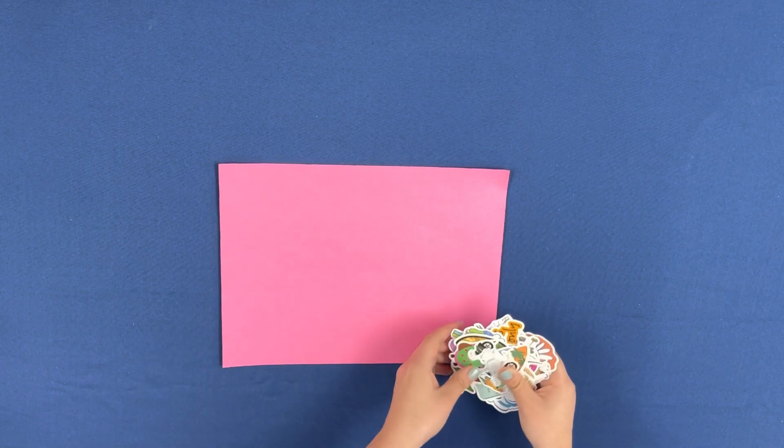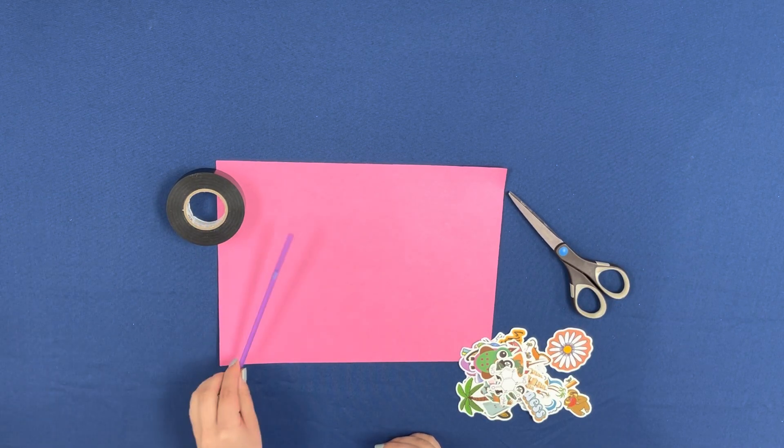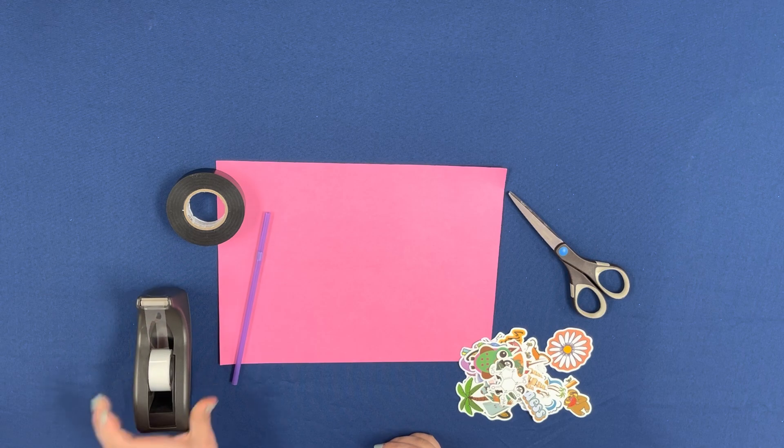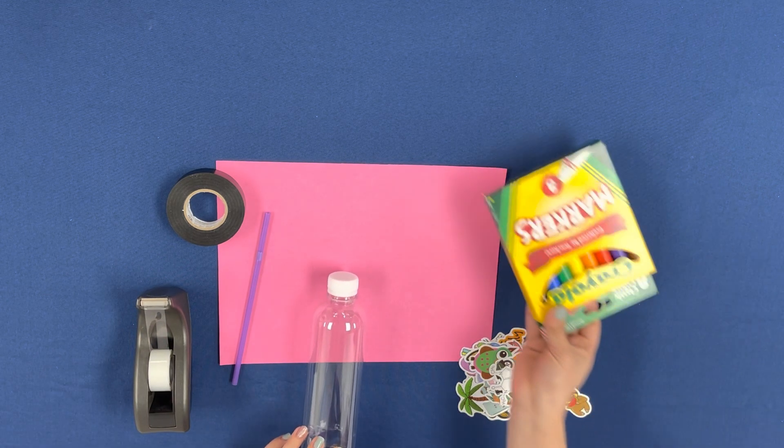For this experiment you will need a piece of paper, some stickers, scissors, electrical tape, a straw, some regular scotch tape, an empty water bottle, and some markers.